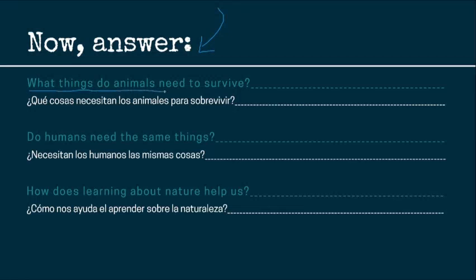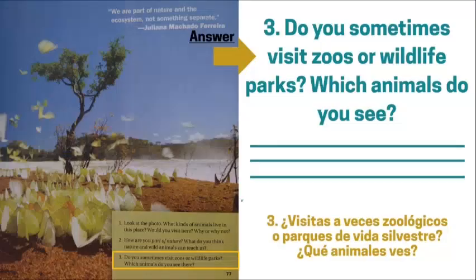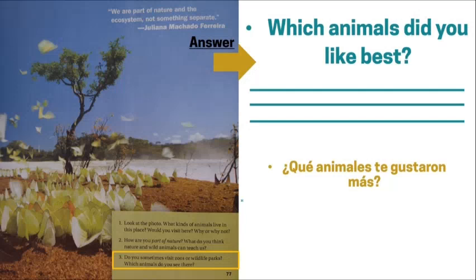These are some extra questions that I wrote for you and I need you to answer them too. The first one is: what things do animals need to survive? Do animals need the same things? How does learning about nature help us? What can we do to help our environment and nature? Exercise three says: do you sometimes visit zoos or wildlife parks? Which animals do you see? Have you ever visited maybe Sea World or the San Diego Zoo, or even here, Bosque de la Ciudad? Which animals did you like best? Which are your favorite animals from those visits to those parks?